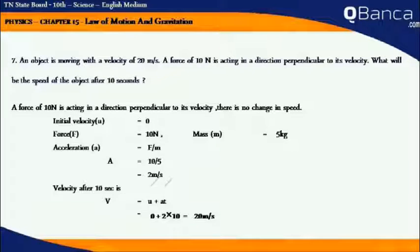A force of 10 N is acting in a direction perpendicular to its velocity. There is no change in speed. Initial velocity U is equal to 0. Force F is equal to 10 N. Mass M is equal to 5 kg. Acceleration A is equal to force by mass. Therefore, A is equal to 10 by 5, that is equal to 2 m per second squared.